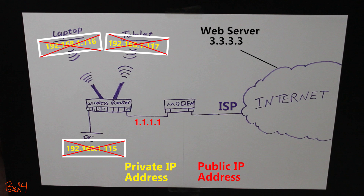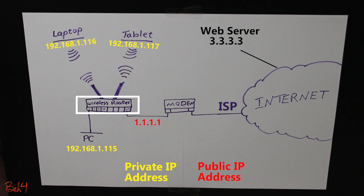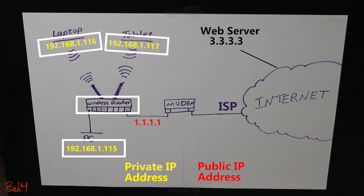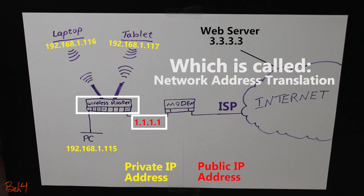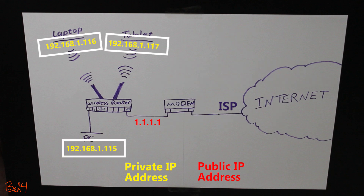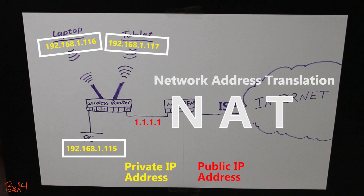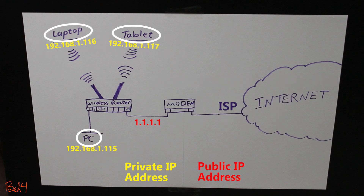The gateway of this network, which is the wireless router, is going to map their private IP addresses to the public IP address before they can access the web server. So with the help of private IP addresses and also network address translation, multiple devices can use a single public IP address to access the internet.